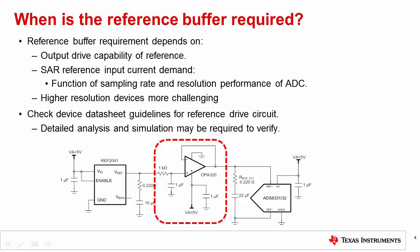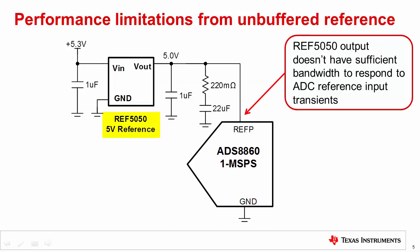Let's look at a few example circuits. First, let's consider a case where performance is degraded because we didn't use a reference buffer. Here, we show the REF5050 connected to the ADS8860, a 16-bit, 1-megasample-per-second converter. In this example, the REF5050 is not able to recover and recharge the bypass capacitor between conversions, and voltage droop and settling errors occur at the SAR REFP input. These voltage reference settling errors cause linearity and distortion in the conversion result. Since the ADS8860 is a 1-megasample-per-second, 16-bit ADC — relatively fast and high resolution — a wide bandwidth buffer is needed.